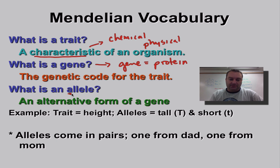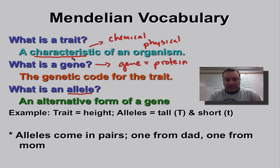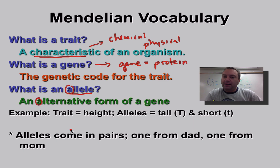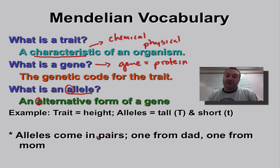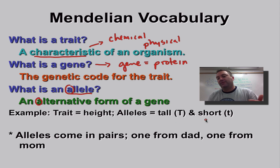The concept of allele is really important. By definition, it's an alternative form of the gene. When you see the letter A in allele, think 'alternative form.' What that means is there's a gene for a certain trait, but that trait may come in two different types. For example, with height in pea plants, there's a gene for height, but that gene comes in two forms — a tall form and a short form. So you have a tall allele and a short allele.